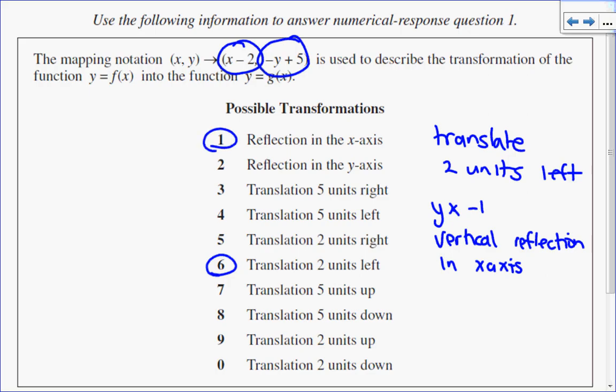Then plus 5. When I add 5 to a y value, that's a translation. This time it's a vertical translation, literally 5 units up, which is option 7.